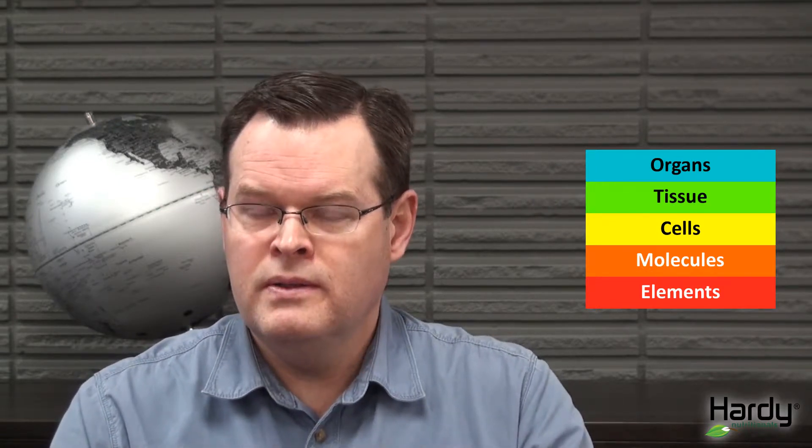Which is the organ level. So now an organ is a unique structure. It usually has an identifiable shape and the organ performs a fairly specific function in the body. And so we have the heart, the lungs, the stomach. These are examples of organs.